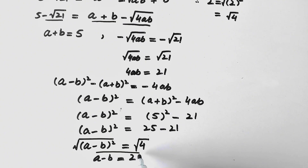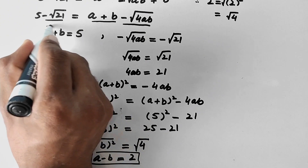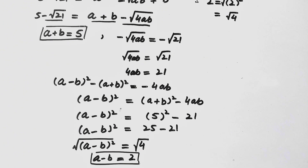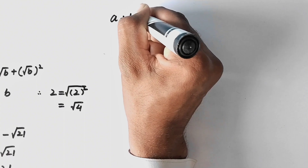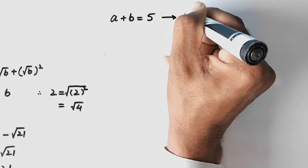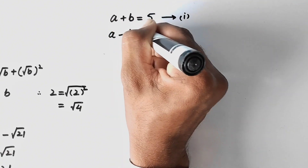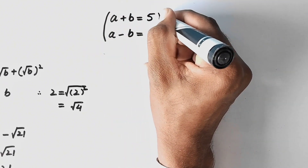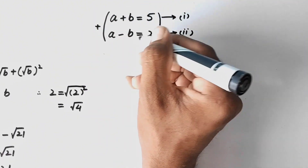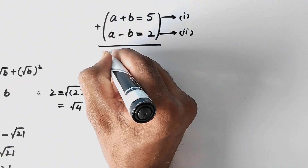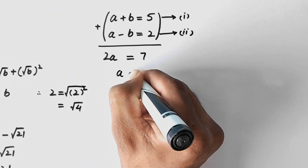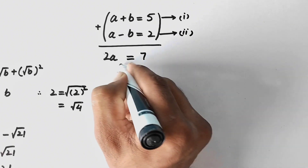We have found A + B = 5 (equation 1) and A - B = 2 (equation 2). Now we will add these equations to find A. Adding gives 2A = 7, so A = 7/2.